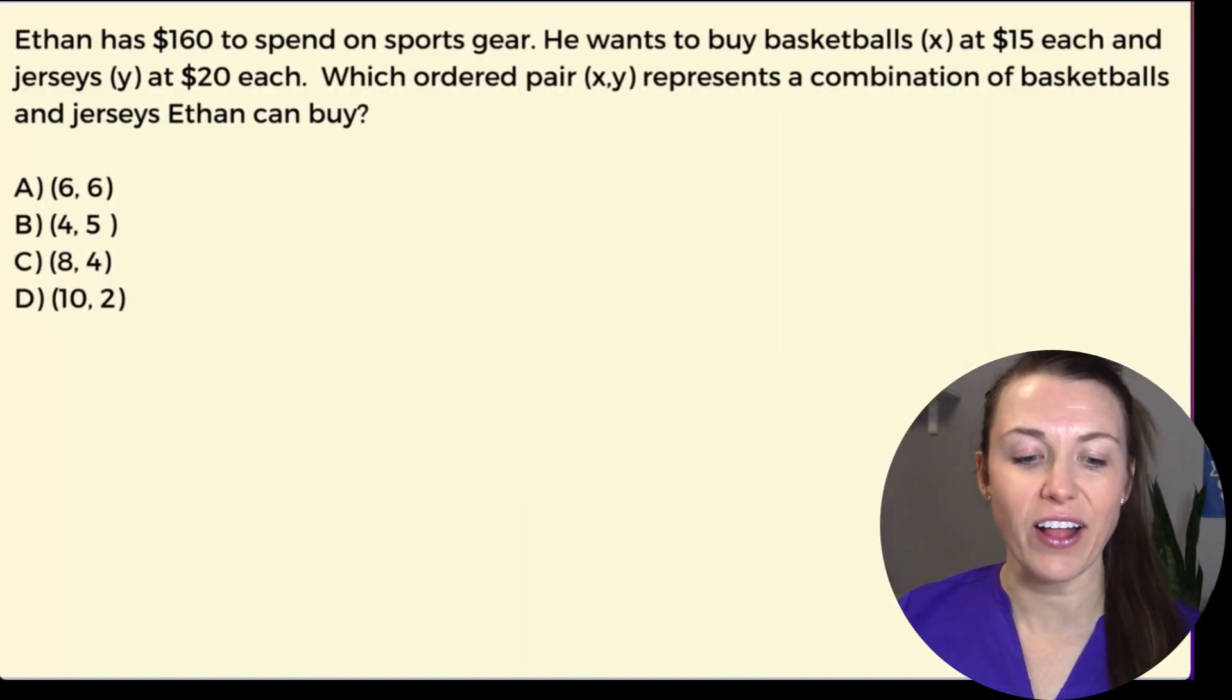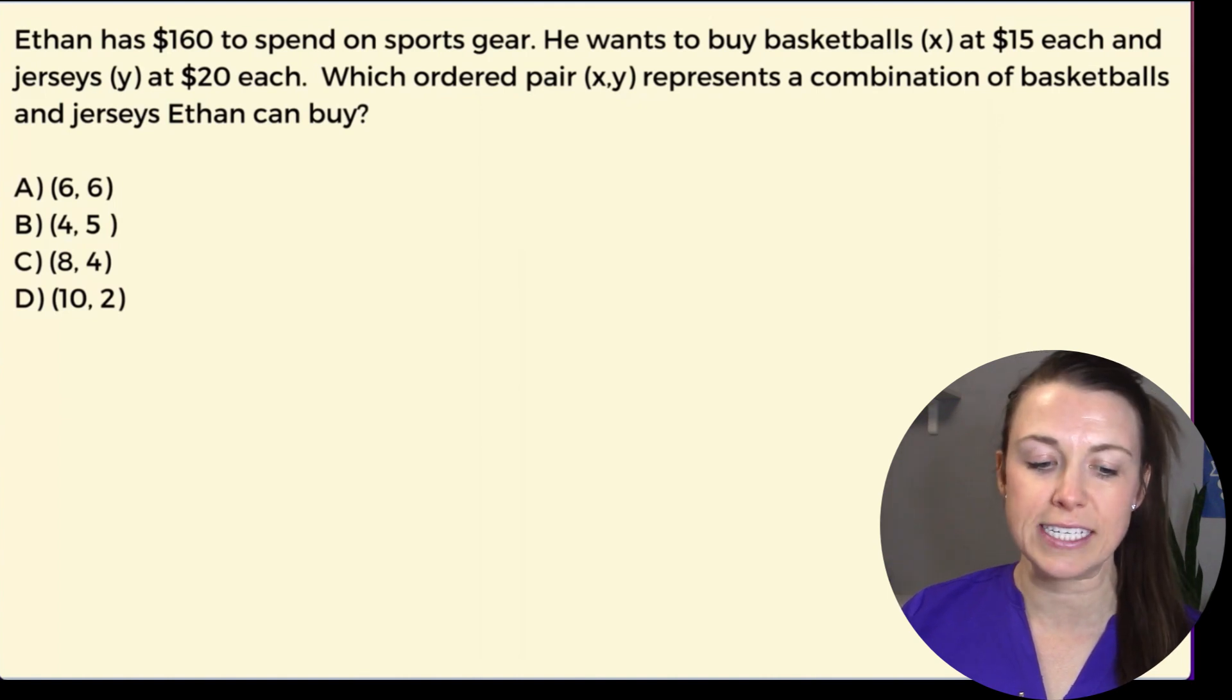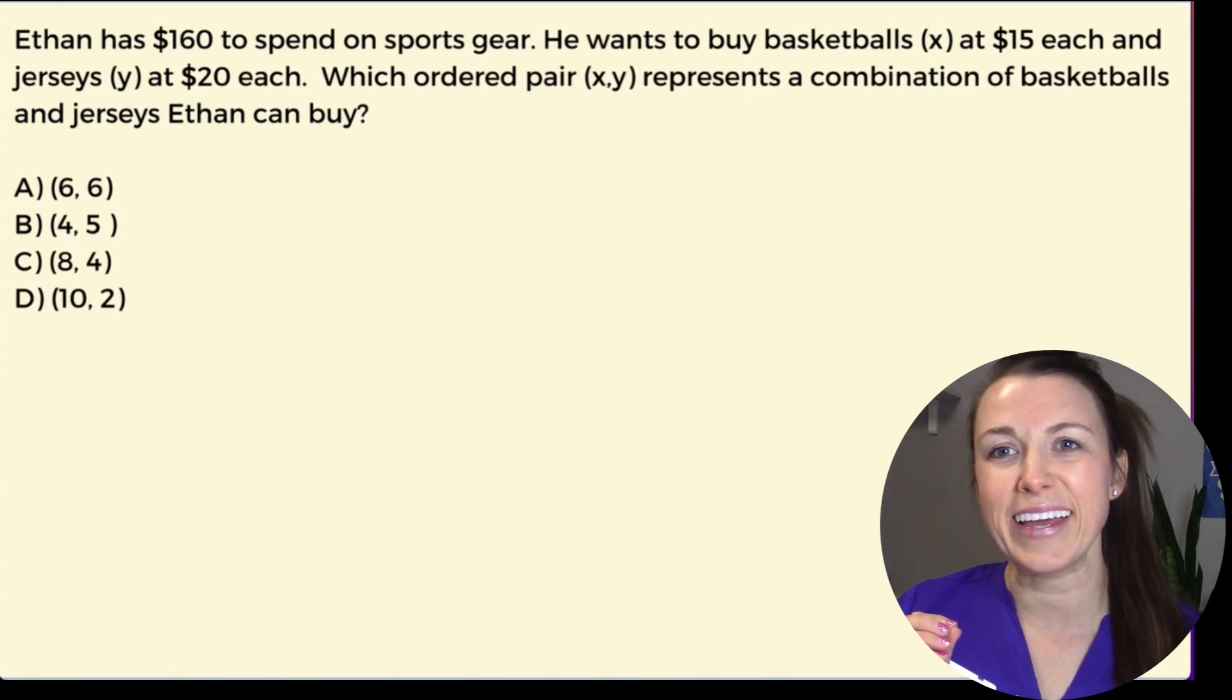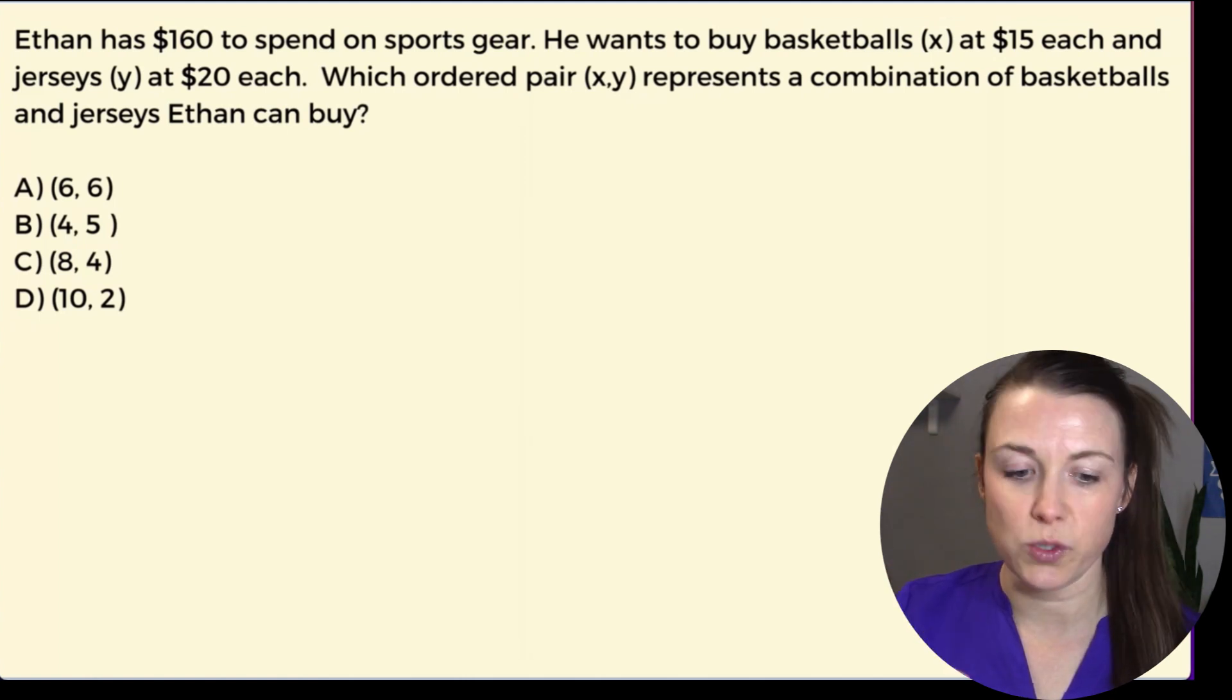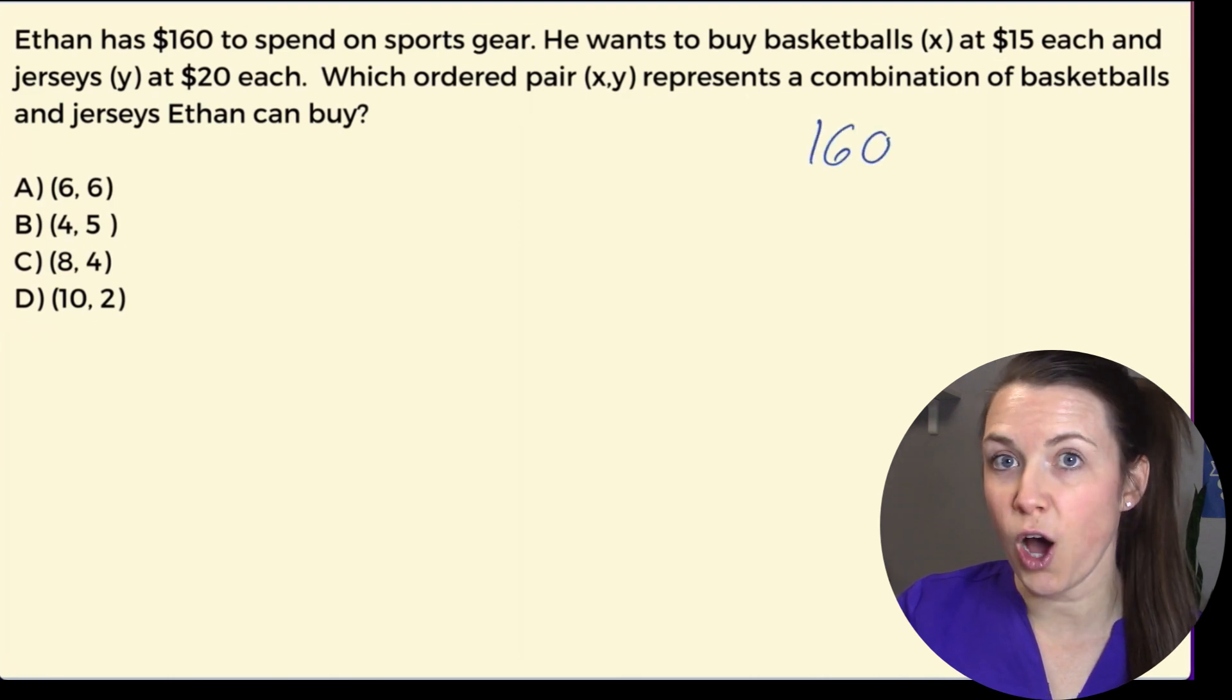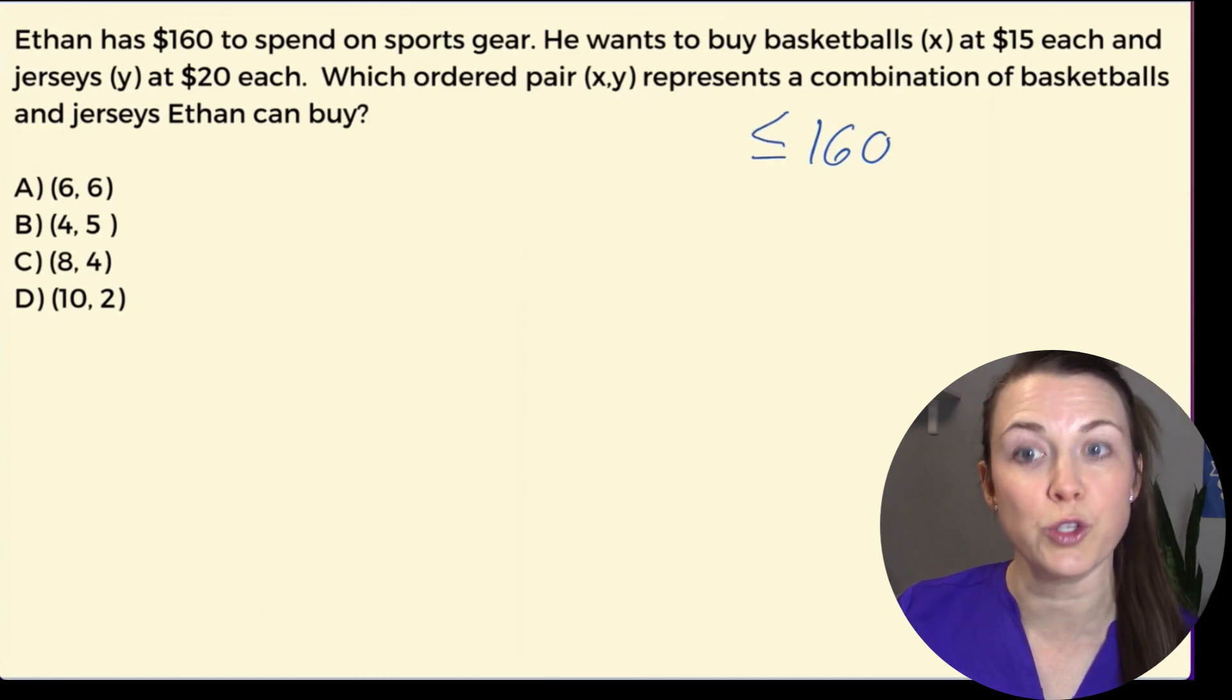Ethan has $160 to spend on sports gear. He wants to buy basketballs (x) at $15 each and jerseys (y) at $20 each. Which ordered pair (x, y) represents a combination of basketballs and jerseys Ethan can buy? I wonder why he's buying so much. I think he must be a coach or something. We're going to do the same thing that we did with Zoe in the last question. So how much does he have? $160. And we know that he can't spend more than $160, so it's going to be less than or equal to $160.